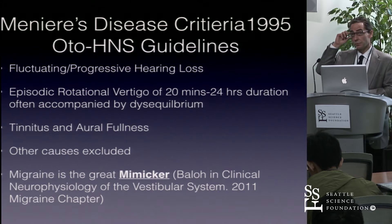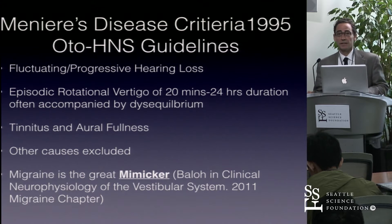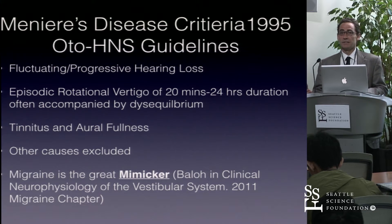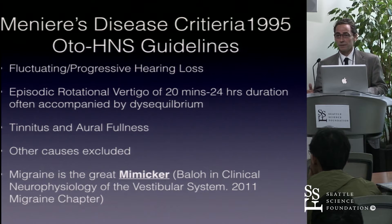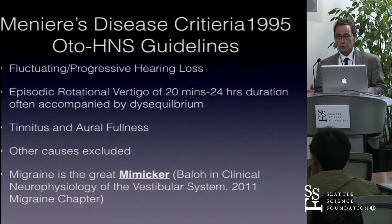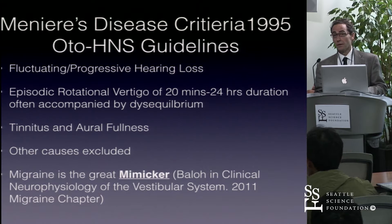The 1995 guidelines for Meniere's disease define it as fluctuating progressive hearing loss, episodic rotational vertigo of 20 minutes to 24 hours duration, often accompanied by disequilibrium, tinnitus, and aural fullness associated with these spells of vertigo. Other causes need to be excluded.